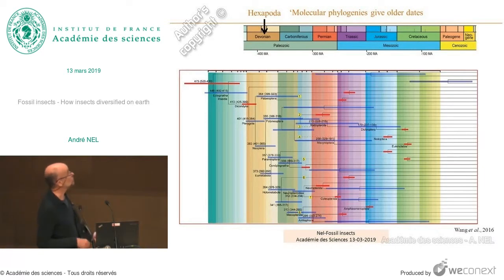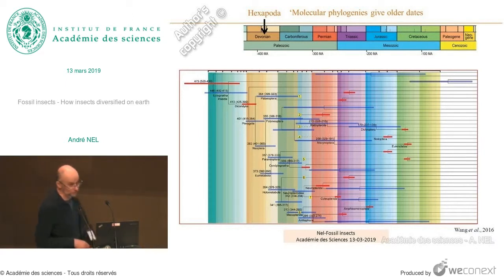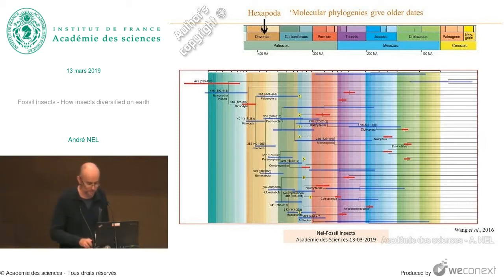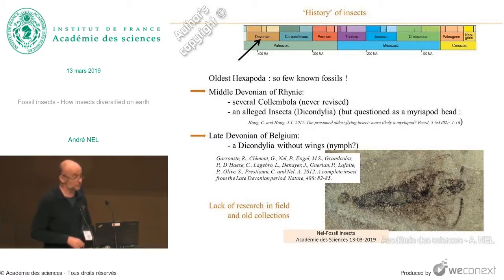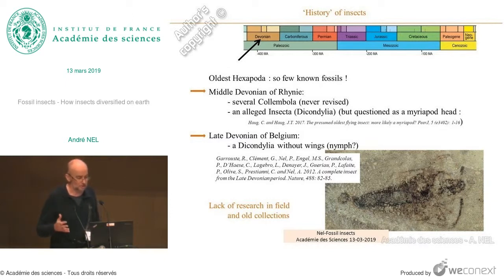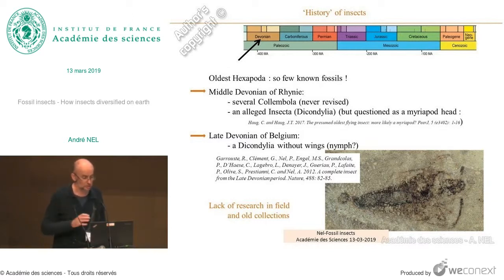Recent molecular dating pushes insects even further back, into the Cambrian, which seems surprising because there were no plants known on land at that period. The Ordovician could be more accurate since we have the first land plants then, but we still have no insect fossils. The problem with the first fossil insects from the Devonian is that we have very few. We have Collembola, which are hexapods but not really insects. Several species, found at Rhynie, were never really described in the 1920s. There may also be a Diplura — a real insect — but only the head with mouthparts, and that was questioned by Hogg and Hogg in 2017.